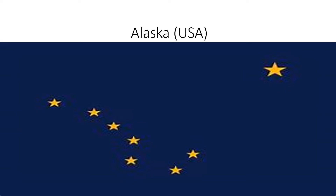Alaska: it's from the USA but it has its own flag. There are yellow stars in the flag — one, two, three, four, five, six, seven stars — and there's one big yellow star in the corner of the flag, and behind it is dark blue.